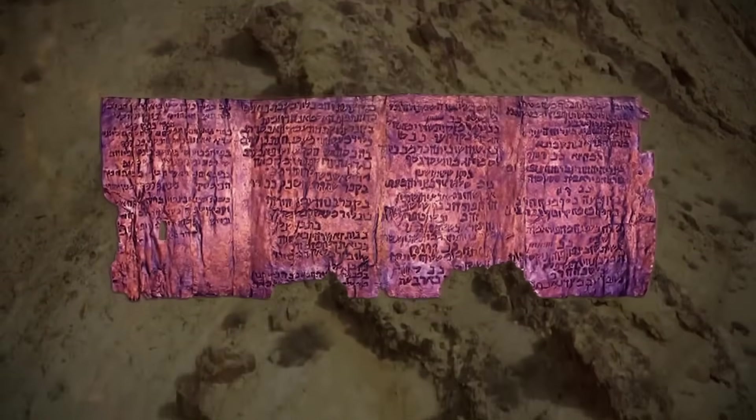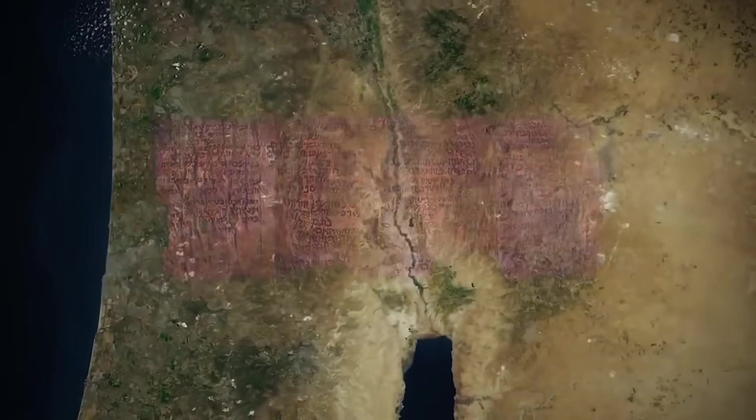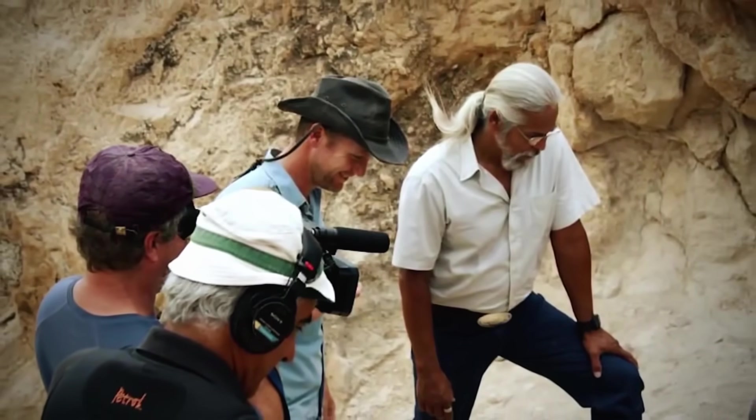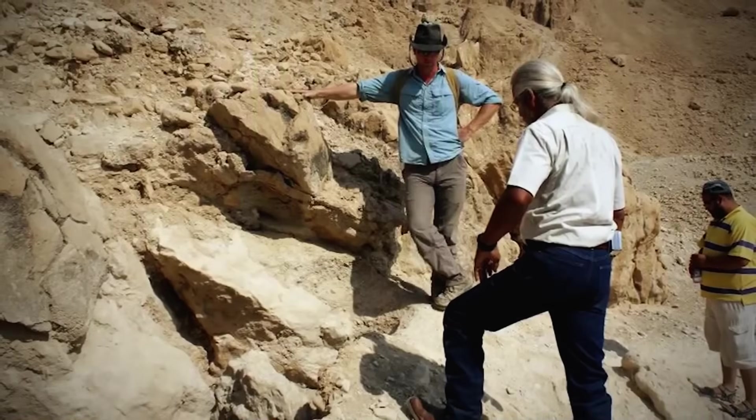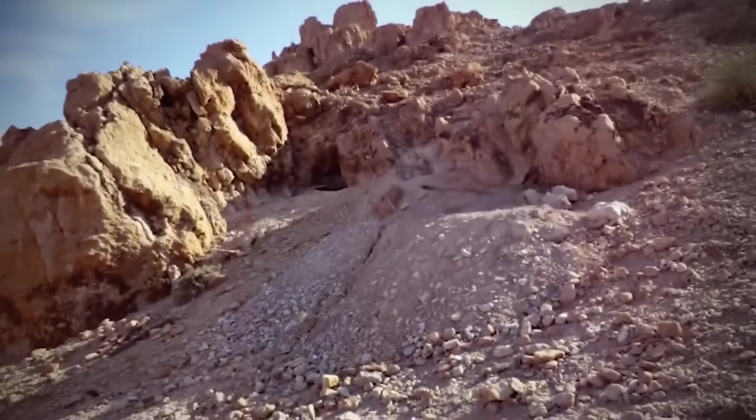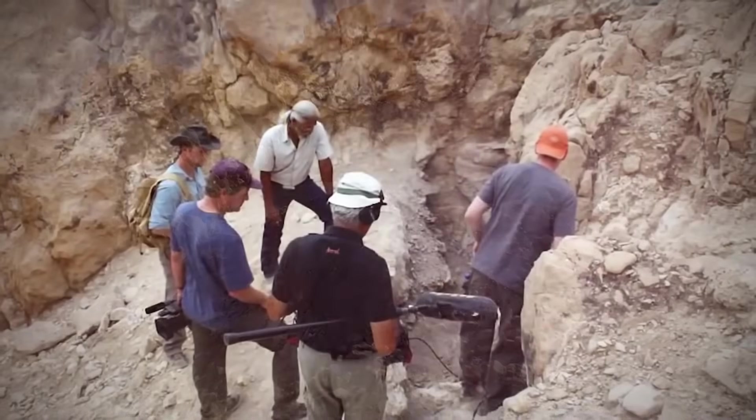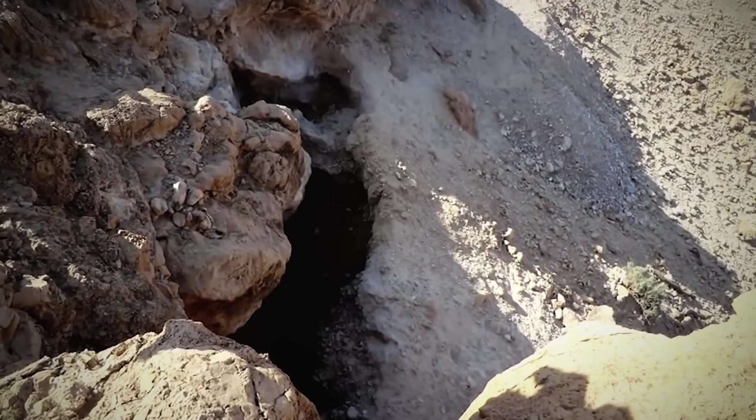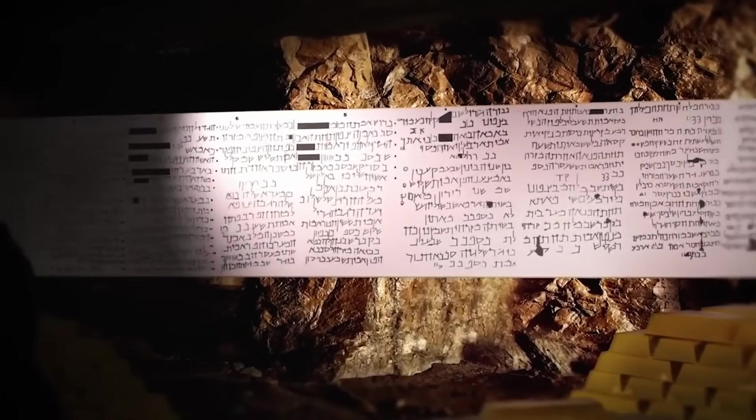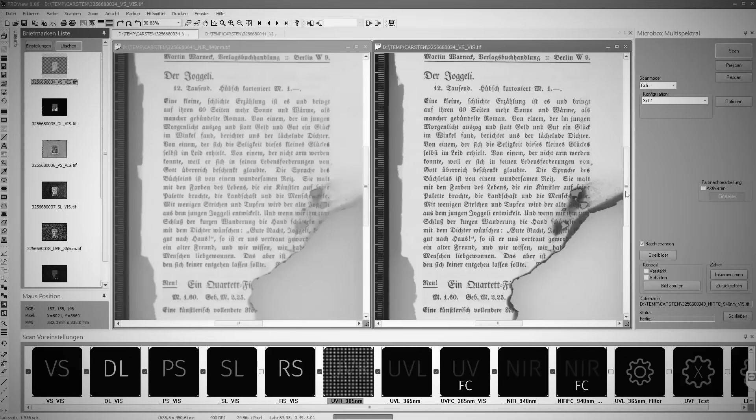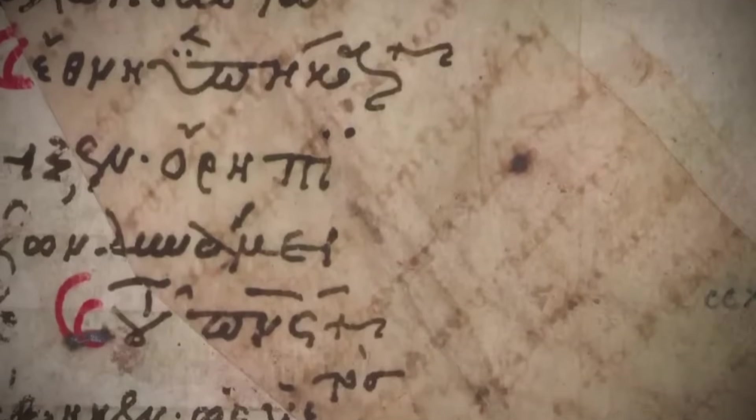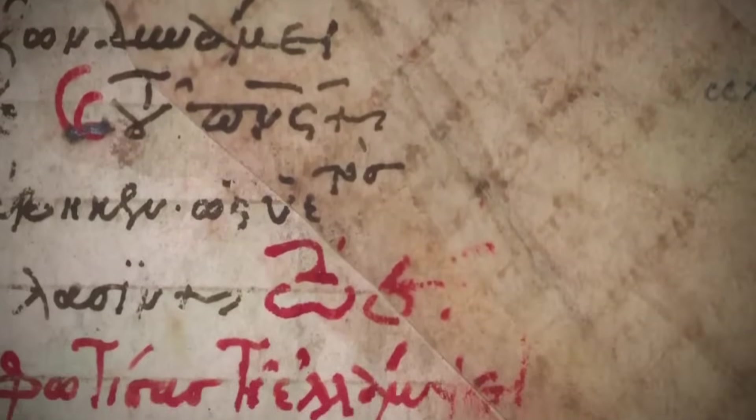For decades, treasure hunters and archaeologists have searched these locations. None have found the promised riches. This has led some scholars to question whether the scroll is fact or fiction. Could it be recording real treasures or merely folklore? Translation challenges have plagued researchers from the beginning. The scroll contains unusual Hebrew vocabulary not found in other texts. Many experts believe it was copied by a scribe who didn't fully understand what he was writing. Imagine transcribing technical jargon in a language you barely speak.